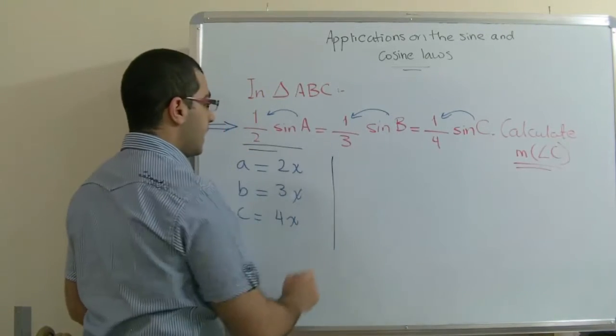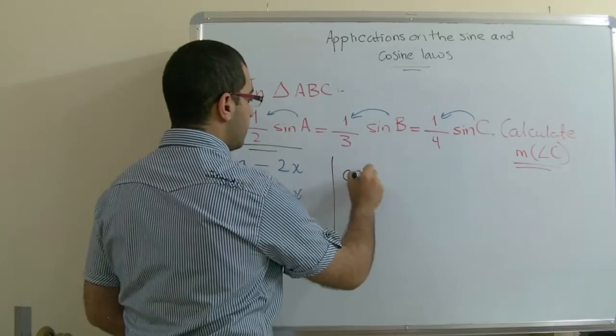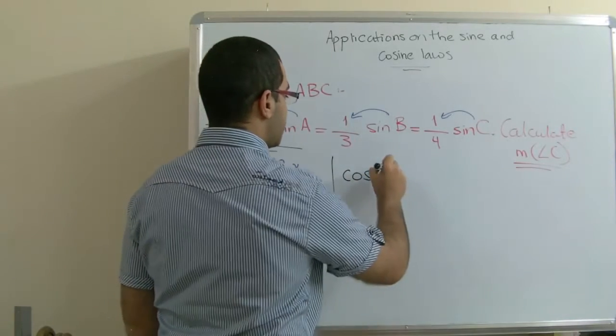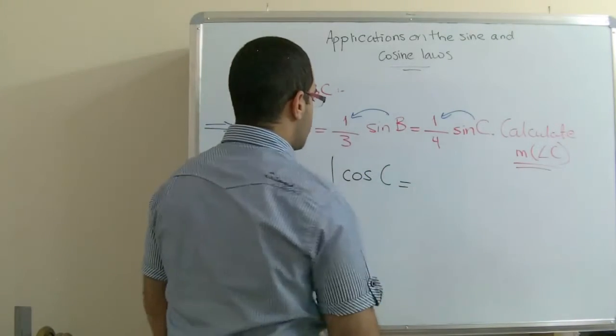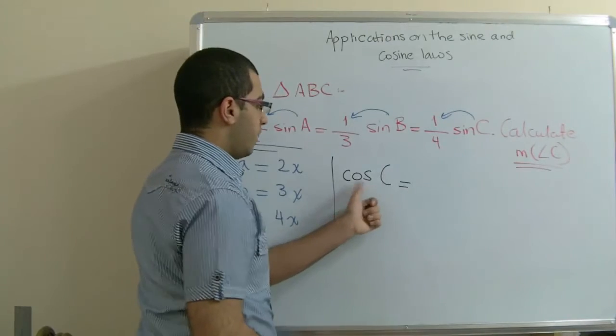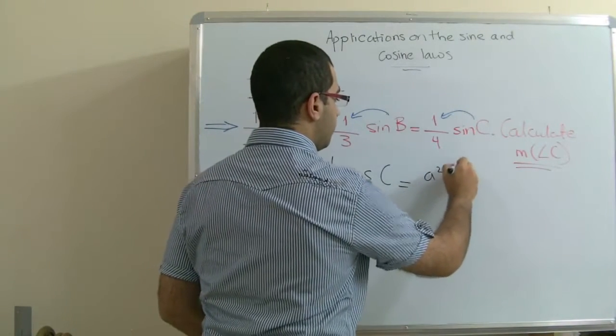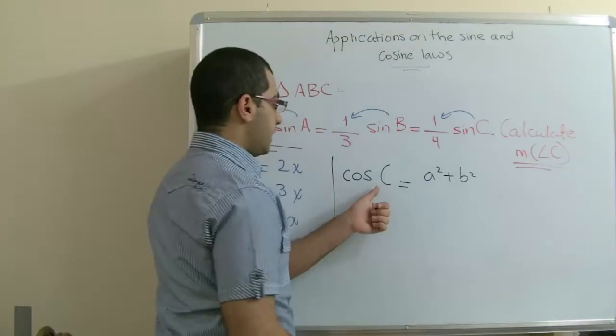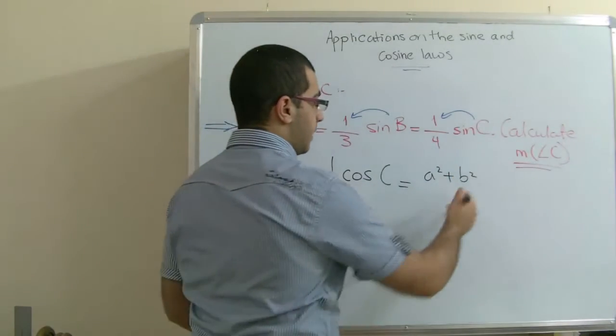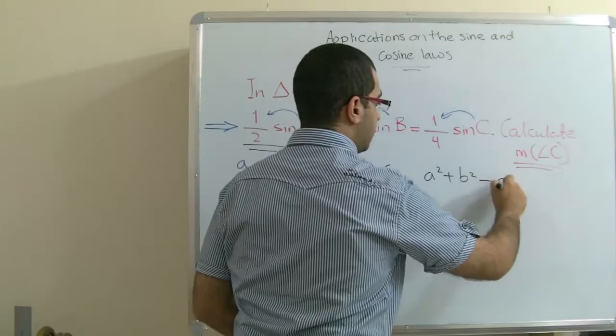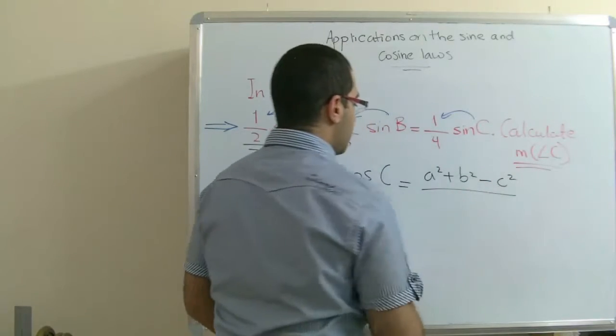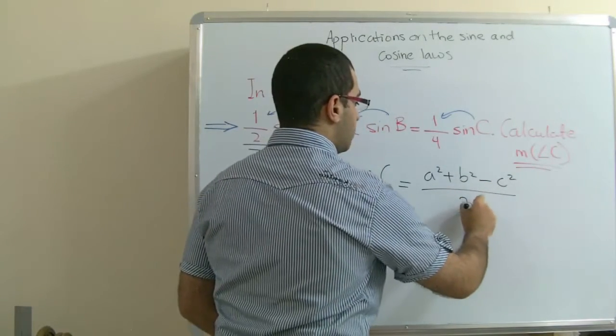Then we have the cosine law, cosine C, which will equal the two opposite sides from C, or A squared positive B squared. Then we get the side opposite to C with a negative sign. Then we have here 2ab.